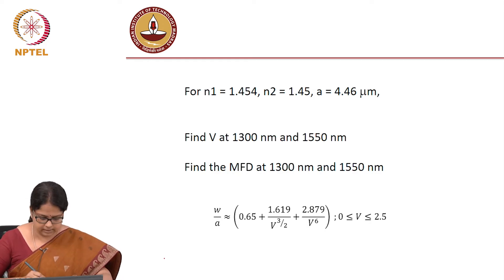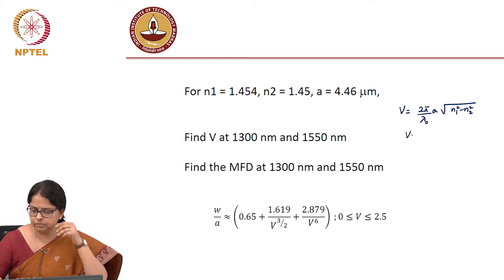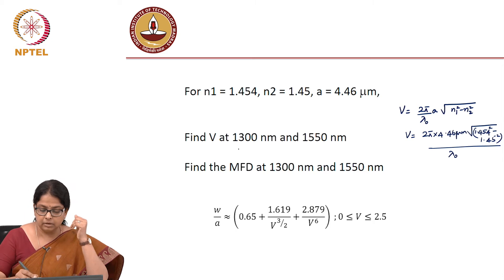So you can calculate V as 2π by, now this one is always free space wavelength λ. So this is the root of N1 squared minus N2 squared. So what is the V at 1300, did you calculate? 1300 is 2.3 to 3 and 1550 is 1.9485.